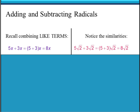Adding and subtracting radical expressions is very similar to combining like terms. If you remember back when you first learned about like terms and how to combine them, you'll remember that for an expression like 5x plus 3x, since the variable portions of those two terms are exactly the same — they're both x terms — we can combine them with addition by adding the coefficients, the 5 and the 3, and that tells us how many x's we have altogether: 8x. We have 5 x's and we add 3 more x's to get a total of 8x's.